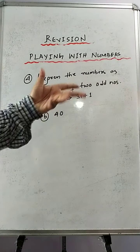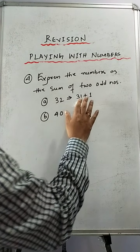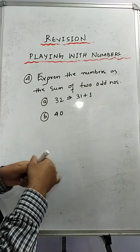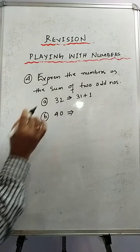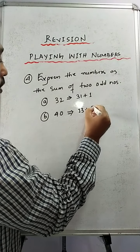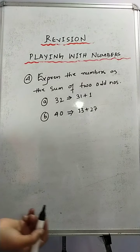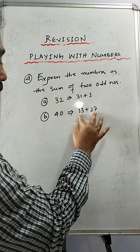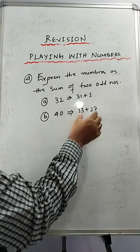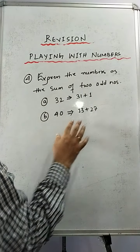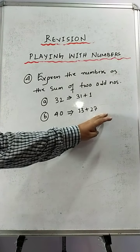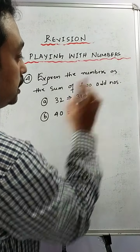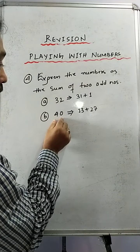There are so many combinations you can write. I am showing 31 plus 1, but if you have any other combination, you can write it — no problem with that. Now how to write 40? We can write 13 plus 27. 13 is an odd number, 27 is also an odd number. If you add these two numbers, we will get 40. There are other combinations also, but they have asked only one combination. Remember that the two numbers should be odd, and the sum should be 40.